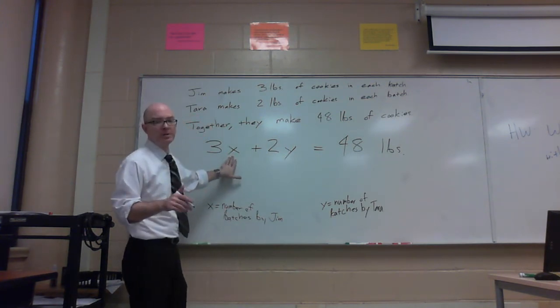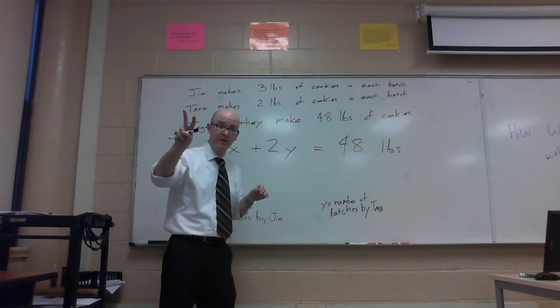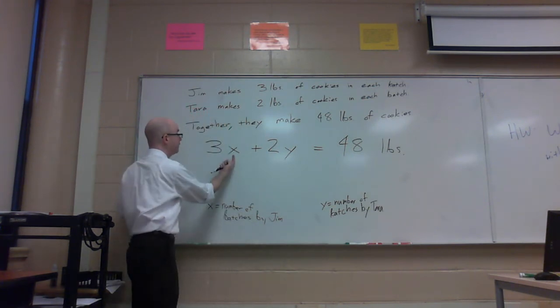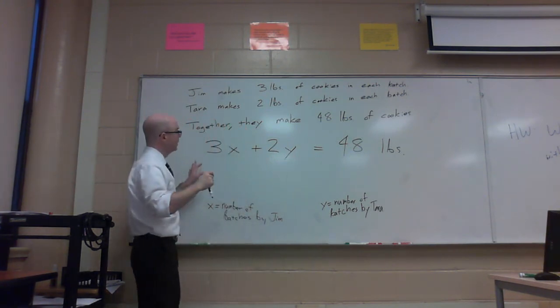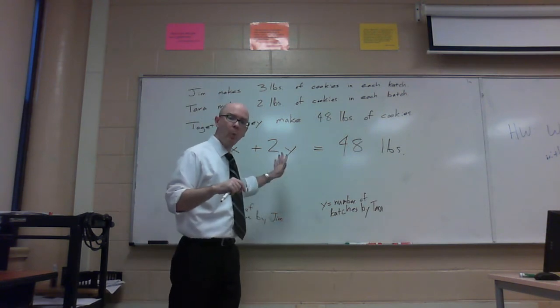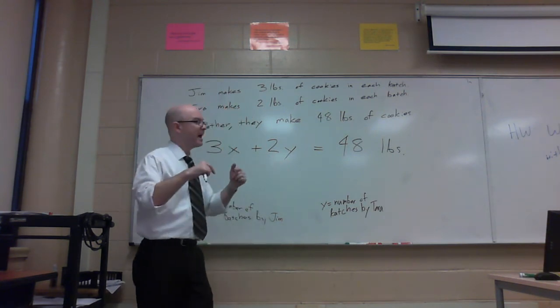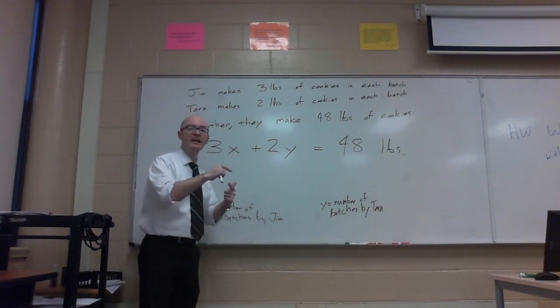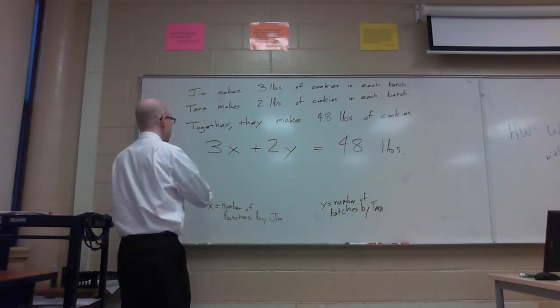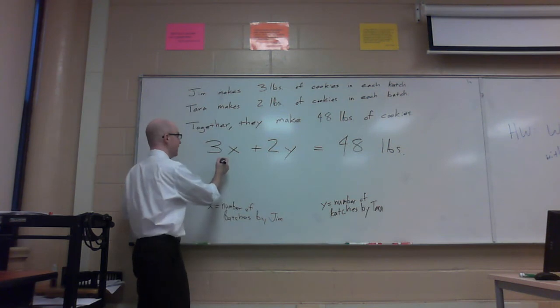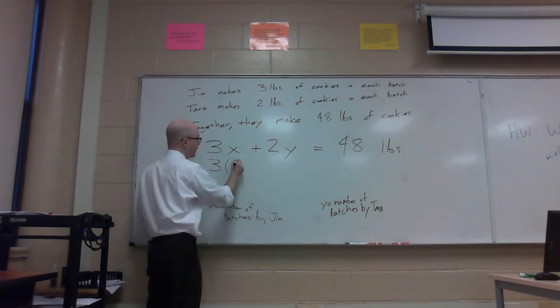And it is very much in line with what we work with quite often. You've got two variables here, two things that could change. The amount of batches that Jim makes and the amount of batches that Tara makes. If you know how many batches that one of them has made, then that determines exactly how many that the other person has made. So for example, let's say that Jim made 4 batches.